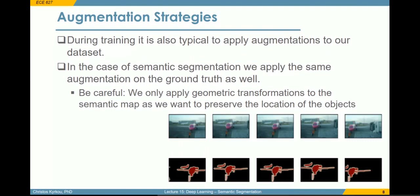One way to augment the data is to apply geometric augmentations to the input image. However, one has to be careful: we need to also apply the same geometric operations to the mask that holds the class labels, so that the spatial relationship between the input and output is retained. On the other hand, if we apply some color transformation or pixel-level processing to the image, we do not apply that transformation to the label. This is an important distinction to consider.